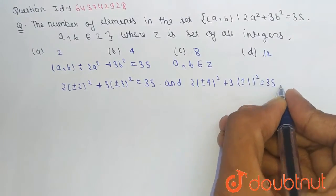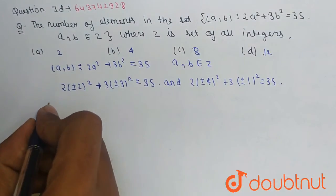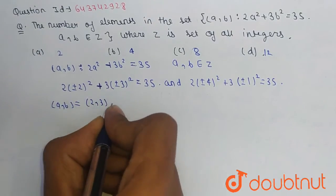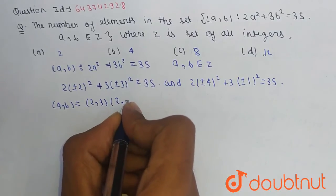So from this we get (a, b) is equal to (2, 3), (2, -3), (-2, -3)...